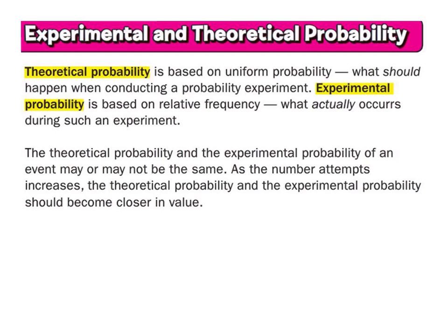This experimental and theoretical probability stuff is going to seem far more difficult than it actually is. The only difference between theoretical and experimental probability is that one is the probability of something happening before you actually do it — that's theoretical — and one is the probability based on what you did, what actually occurs — that's experimental probability.